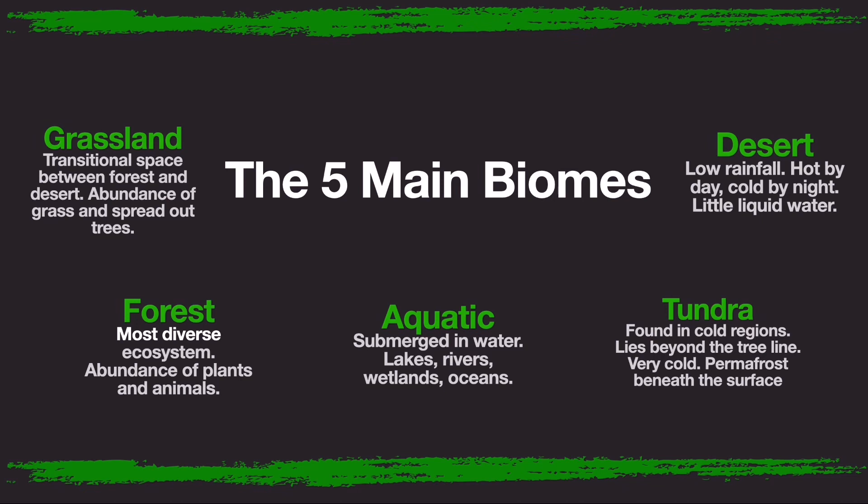Here are the five main biomes. Grassland, a transitional space between forest and desert, which has an abundance of grass and spread out trees. Forest, the most diverse ecosystem, which has an abundance of plants and animals. Aquatic, which is submerged in water — lakes, rivers, wetlands and oceans all count as aquatic biomes.